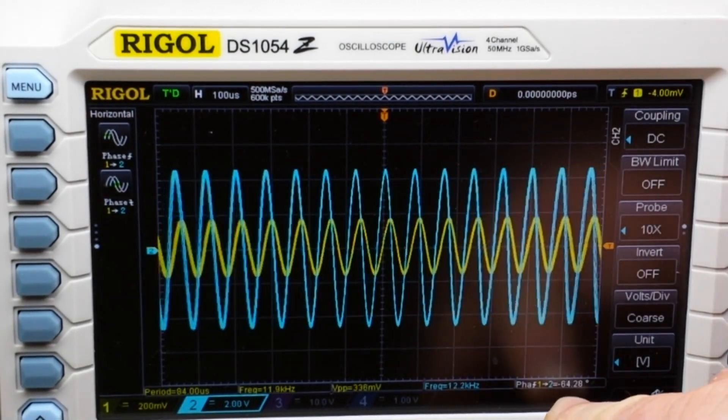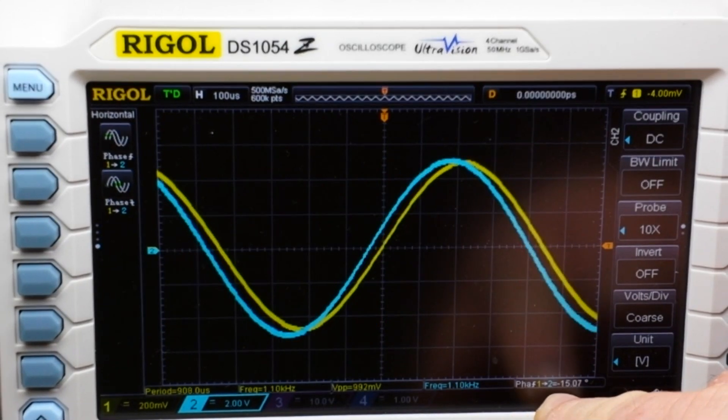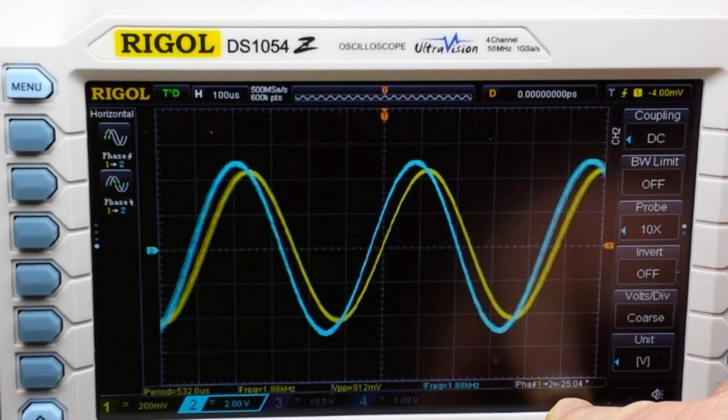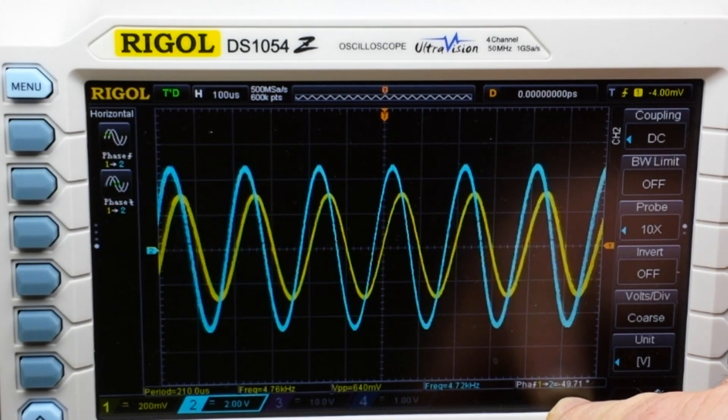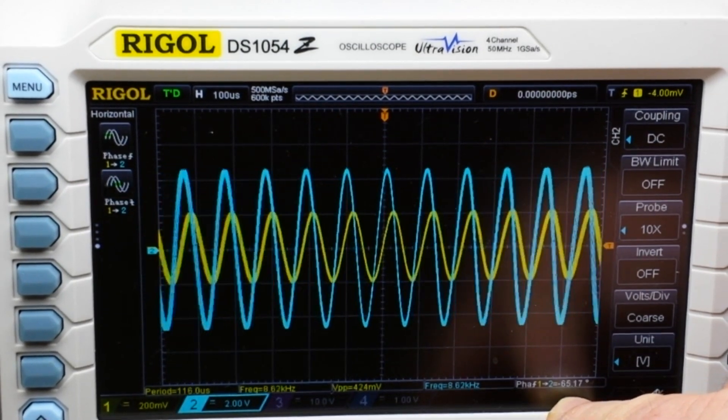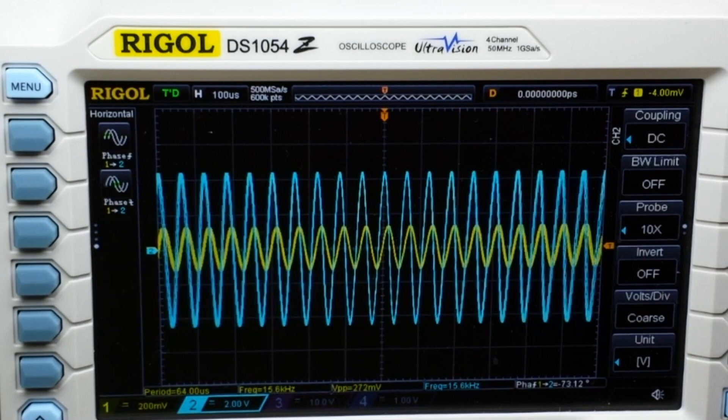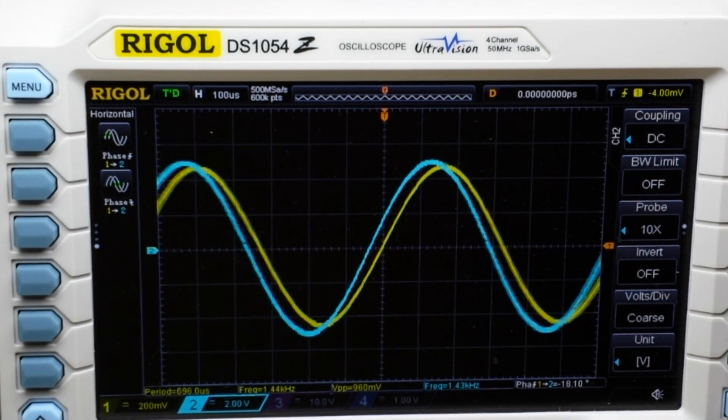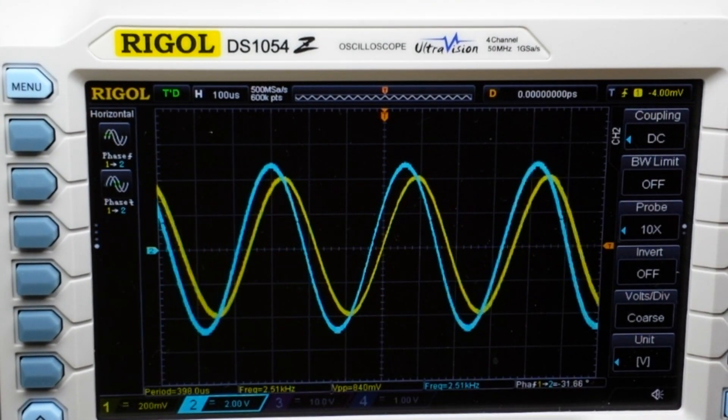You can also see the phase change here in the signals. We're starting out at about 15 degrees, 30 degrees, 40 degrees. Now here's our cut at 60 degrees, all the way up to 70 degrees and 80 degrees before it resets and goes back.